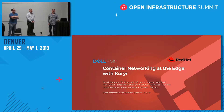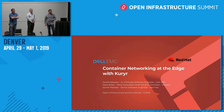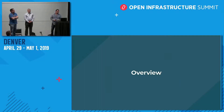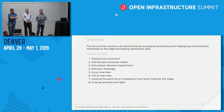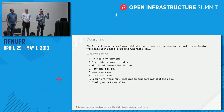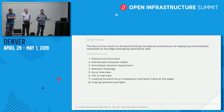Welcome everyone. Today we are here to talk about container networking at the edge with Courier. The focus of our work has been to conceptualize an architecture where we can deploy compute nodes to the edge, eventually running Kubernetes on bare metal and using Courier to talk to Neutron networking to enable networking for containers.